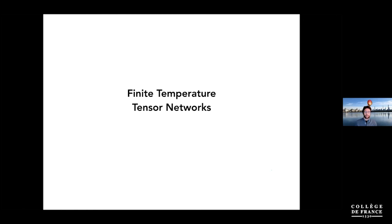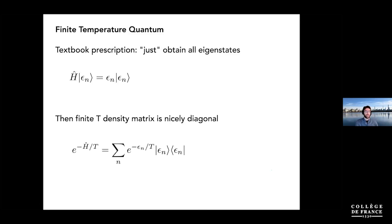Also, at finite temperature things can become more generic. We write down simple toy models like the Hubbard model to understand strongly correlated electron physics, but we don't always want the sharp particularities of our chosen model to dominate everything as they might in the ground state. Introducing a little temperature gives a more universal picture of what electrons might really do across a class of systems.